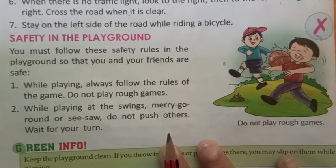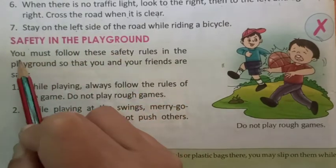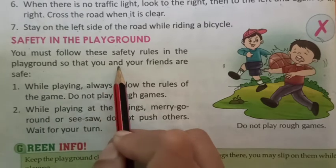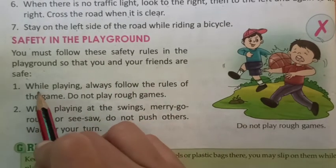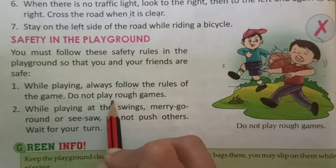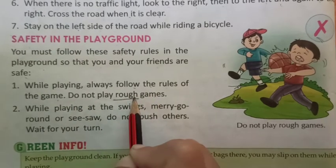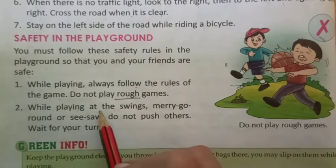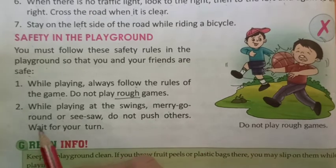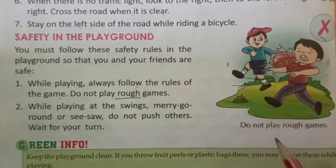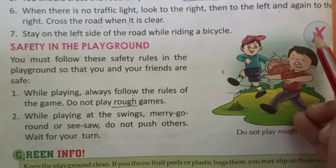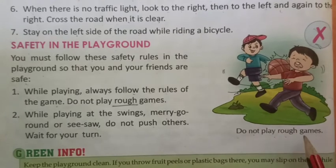Safety in the playground. You must follow these safety rules in the playground so that you and your friends are safe. While playing, always follow the rules of the game. Do not play rough games, R-O-U-G-H. While playing at the swings, merry-go-round, or seesaw, do not push others — wait for your turn. In this picture you can see children playing rough games, hurting each other, which is not correct.